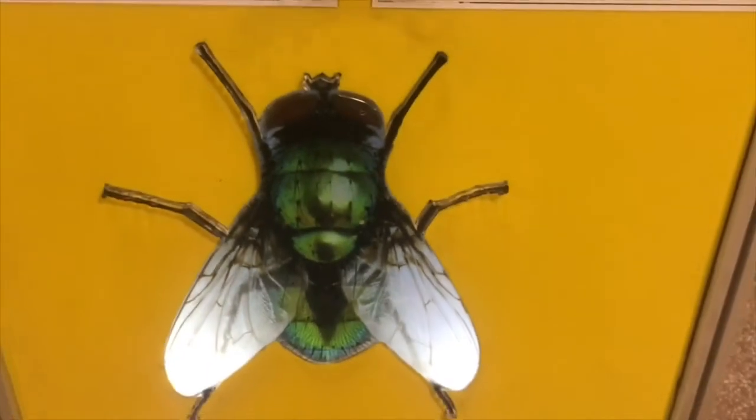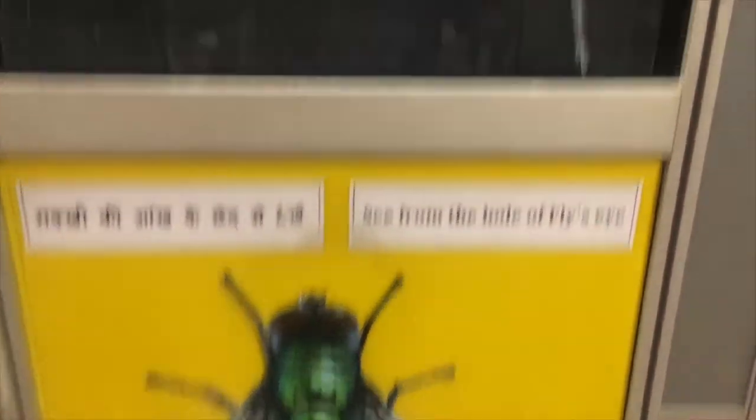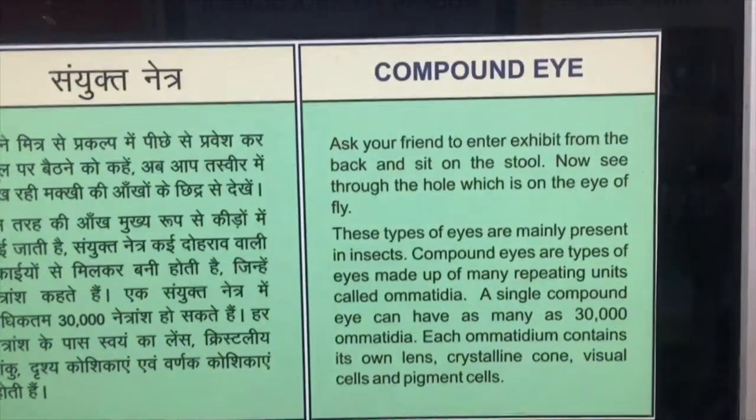One of my friend is seated at the back and there are so many multiples of images will be seen via the eyes of this fly. This is demonstrated in Regional Science City Bhopal and this is called the compound eye. Most of the insects will be having this eye.